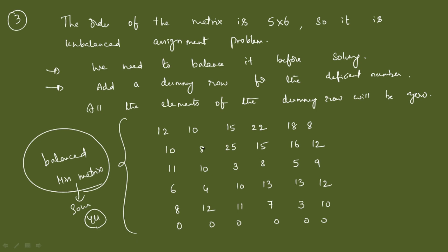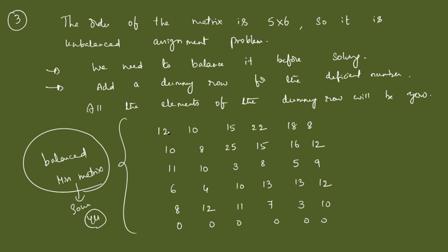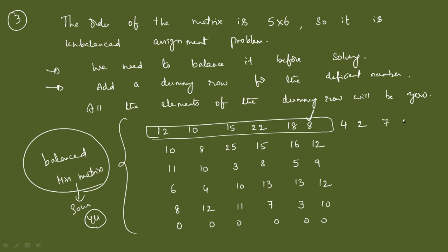Now we can proceed with the regular steps. The first step is the row operation: take the least element from each row and subtract it from the rest of that row. For the first row, the least number is 8. So: 12−8=4, 10−8=2, 15−8=7, 22−8=14, 18−8=10, 8−8=0. We do the same for all remaining rows — select the least element and reduce the entire row by that number.